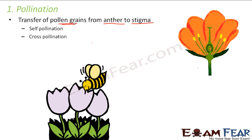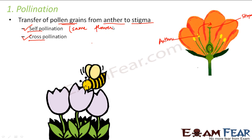There are two possibilities. One is that the pollen grains move from the anther to the stigma of the same flower — this is known as self-pollination. Another possibility is that pollen grains move from the anther of one flower to the stigma of another flower — that is known as cross-pollination. So self-pollination means same flower and cross-pollination means different flower.